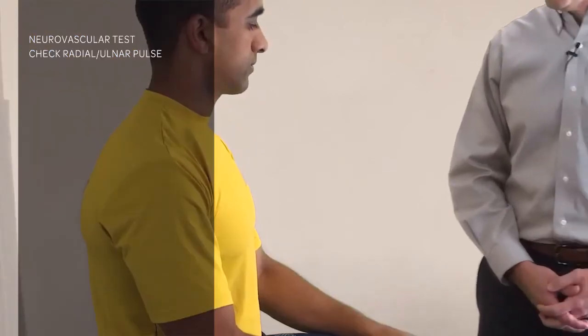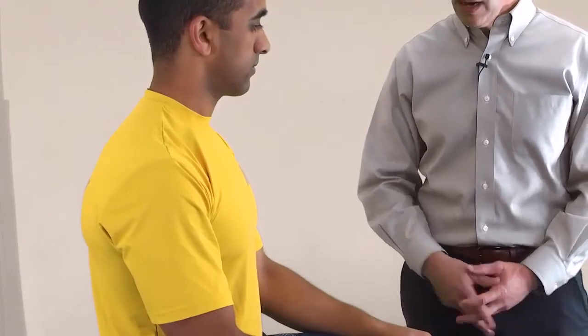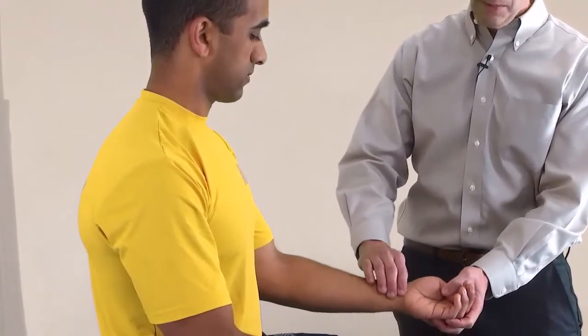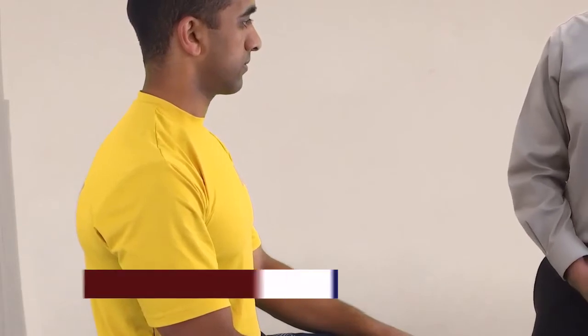You can do neurovascular testing, but we've already done that as part of the C-spine examination. It is never wrong to check the radial and ulnar pulse if you're concerned. Next we move to special tests for the elbow, which includes a test for lateral epicondyle pain in the extensors.